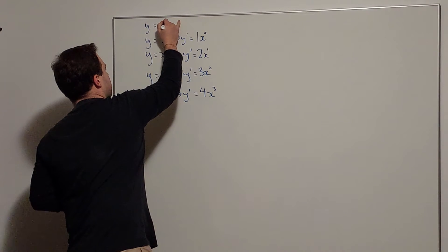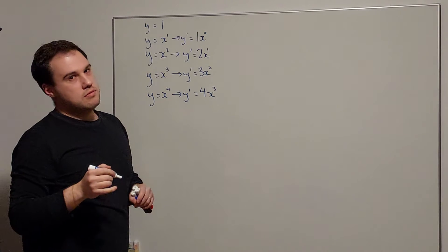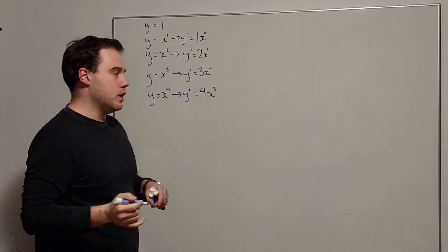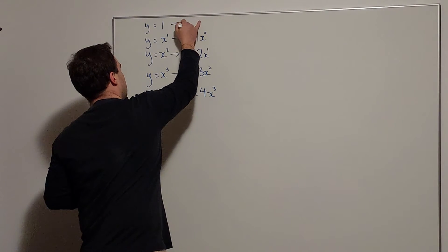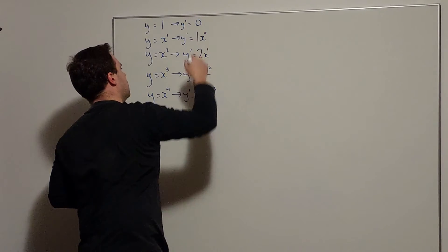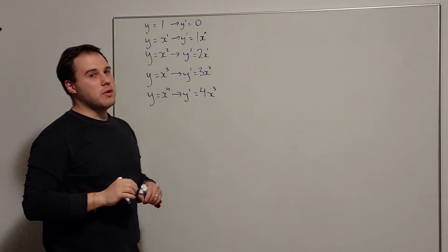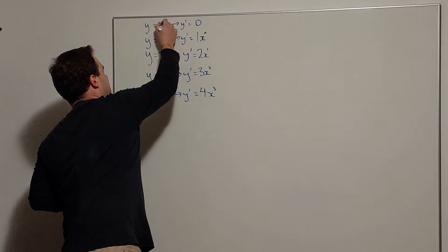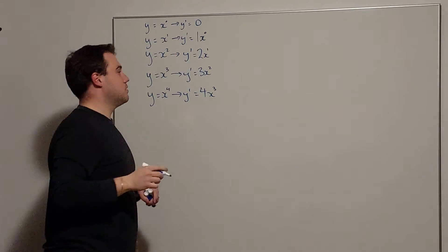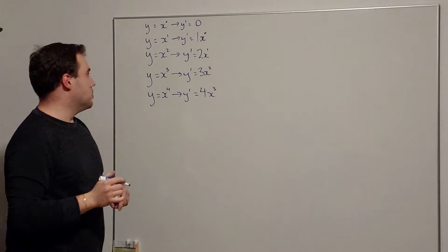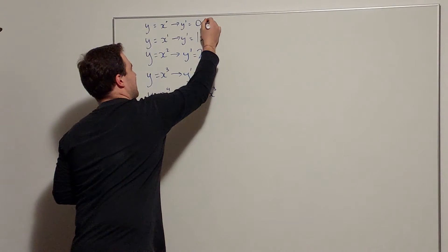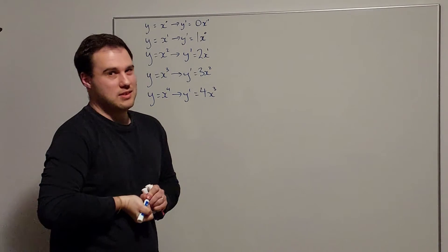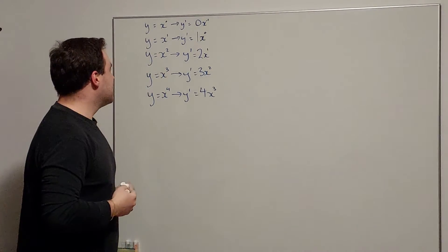We also looked at a constant function, like maybe 1. If 1 is a horizontal line, its gradient everywhere is 0. Now, 1 is the same as x to the 0. This is a bit cheeky, but it kind of works: 0 times x to the negative 1 is 0 times 1/x, which is still 0. So it seems to check out.